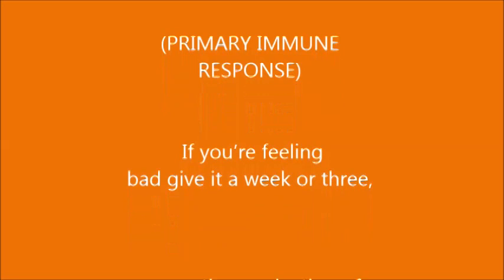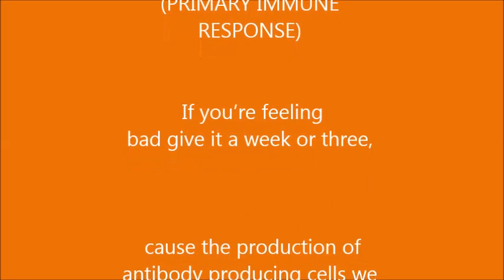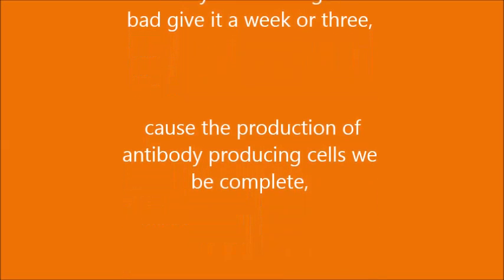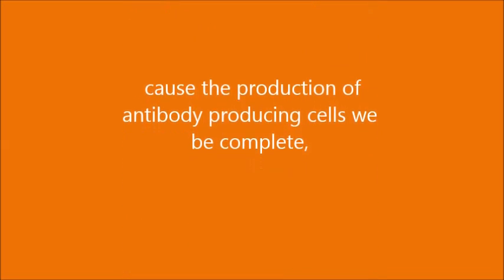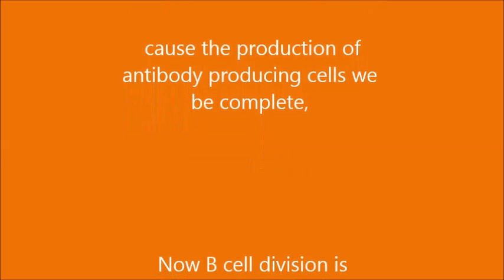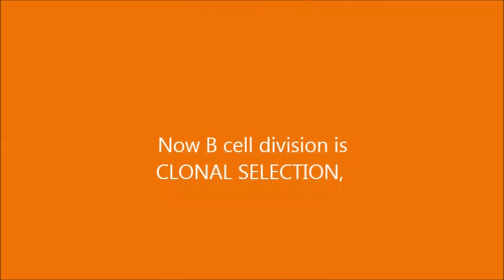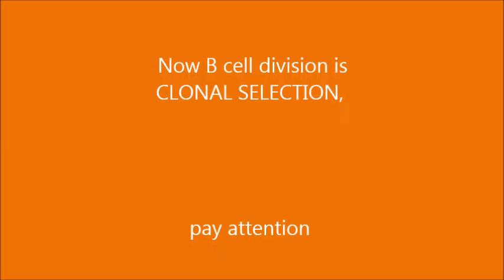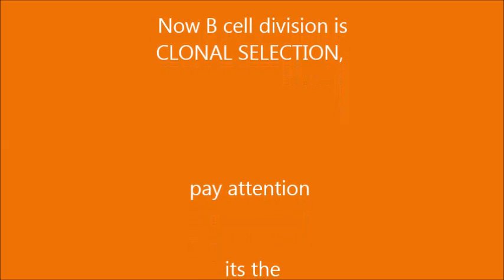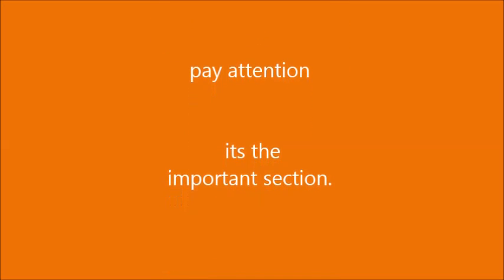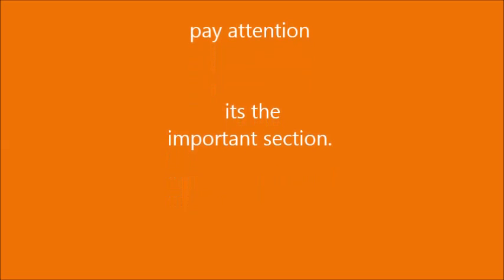Primary immune response: if you're feeling bad, give it a week or three, because the production of antibody-producing cells will be complete. Now B-cell division is clonal selection — pay attention, it's the important section.